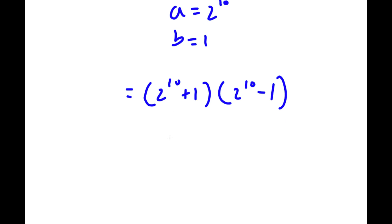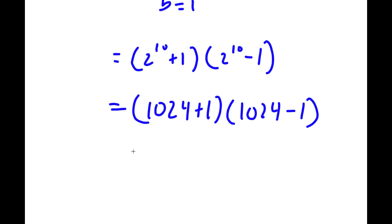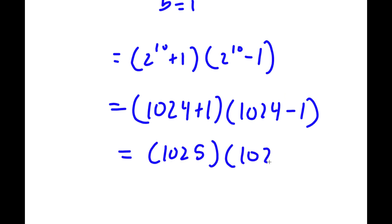Now, 2 to the power of 10 is equal to 1,024. So now I have 1,024 plus 1 times 1,024 minus 1. 1,024 plus 1 is 1,025, and 1,024 minus 1 is 1,023.